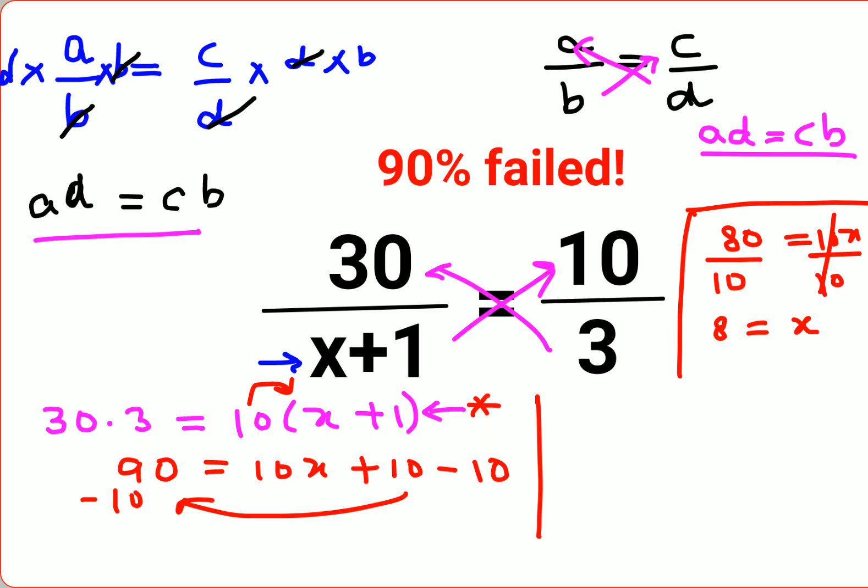Now, coming back, like I said, at this point only you should have done it. Why did I say that? See, 30 into 3 is 90. And instead of multiplying 10 inside the bracket, because eventually you want all the numbers on the other side of the equal to, divide both sides by 10. So this gets cancelled and this is 9 equals to x plus 1. Subtracting 1 on both sides, therefore 8 equals to x.